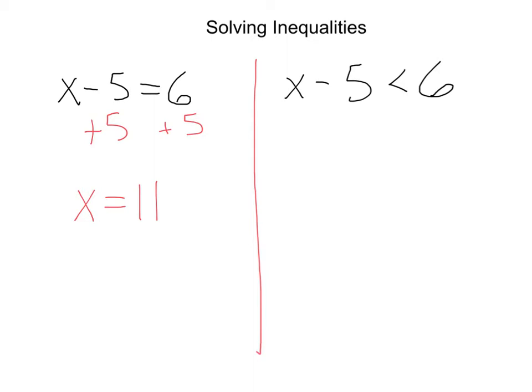Now, if we wanted to solve this inequality on the right, we'd do the same thing. We'd add 5 here, and we'd add 5 here, but instead of x equals 11, we'll get x is less than 11.